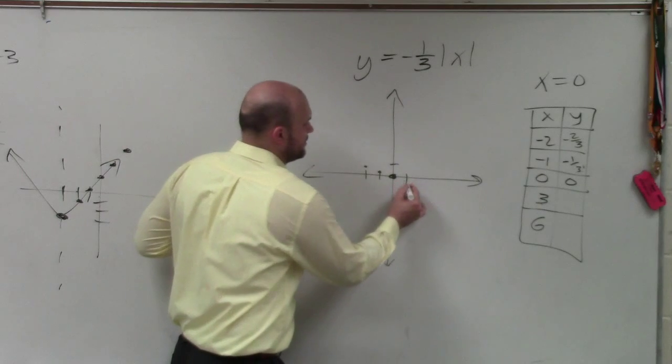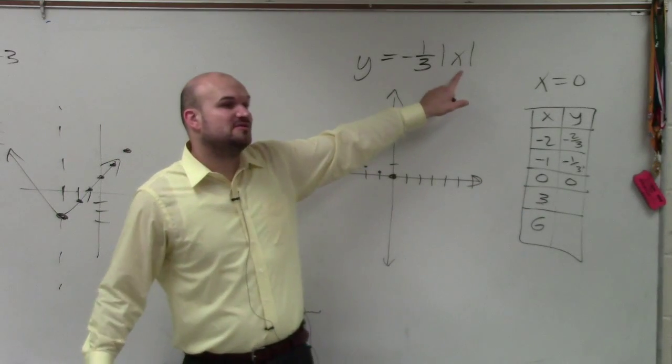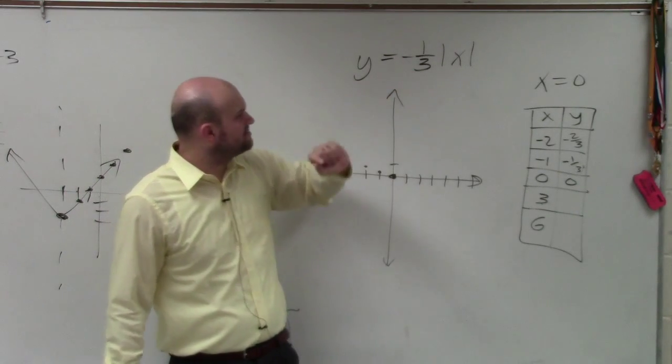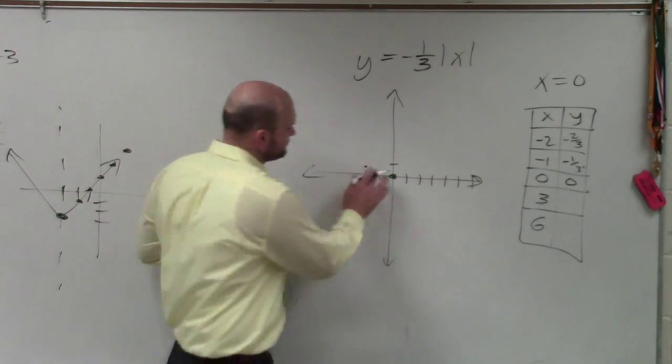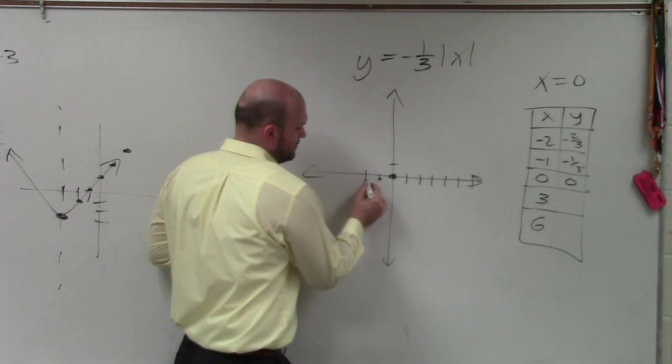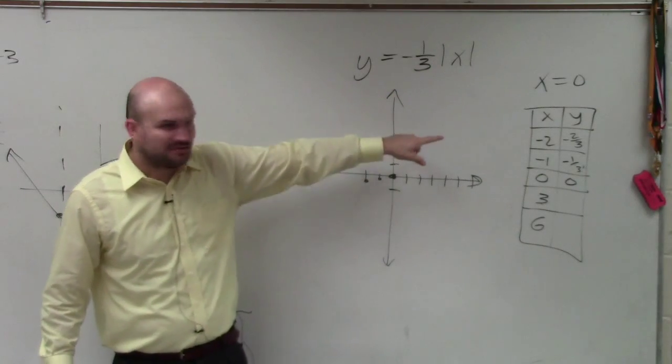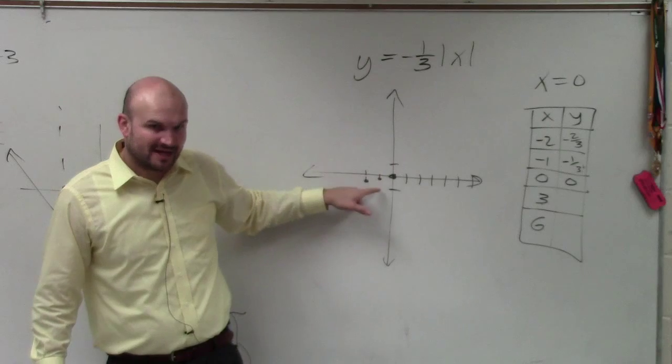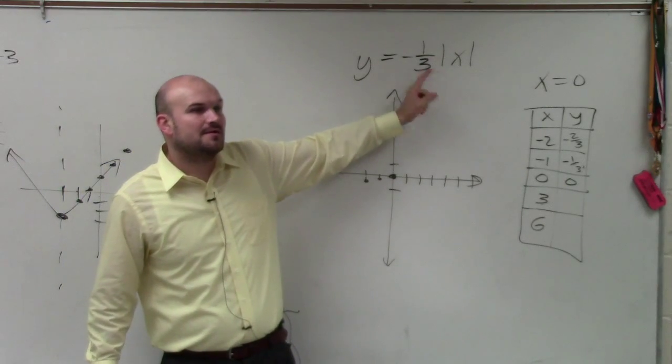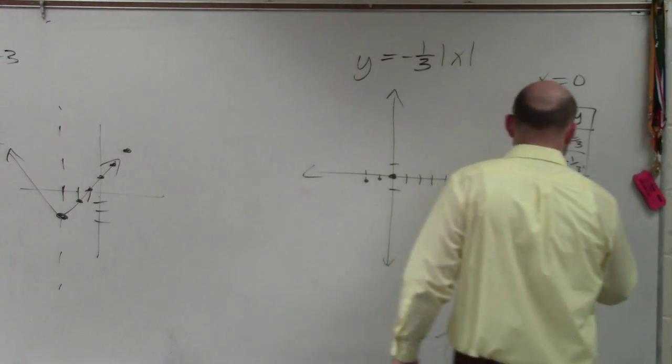So let's do 3. If I plug in 3, absolute value of 3 is 3. 3 times negative 1 third is, oops, I'm sorry. You guys didn't even check me out on that. That's negative. It's negative 1 third and negative 2 thirds. Negative 1, negative 1 third, negative 2 thirds. So let's plug in 3. Absolute value of 3 is 3. 3 times negative 1 third is negative 1.